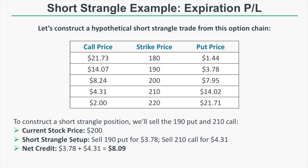Let's look at a hypothetical short strangle position. The stock price is trading at $200, and we believe it will remain between $190 and $210 — a 5% move up or down. We'll sell the 190 put for $3.78 and the 210 call for $4.31, giving us a net credit of $8.09.